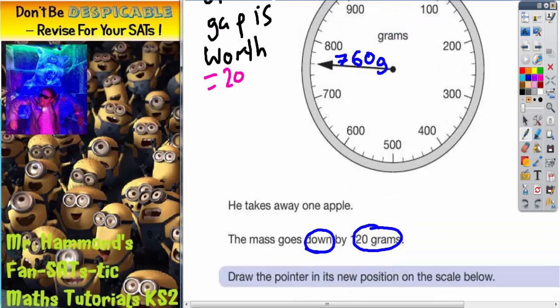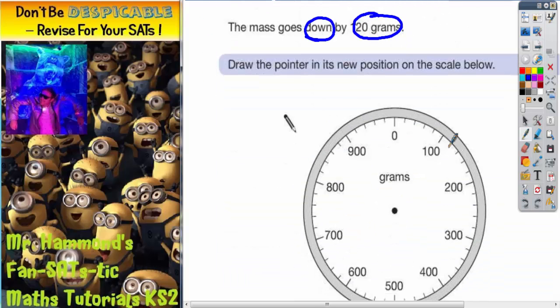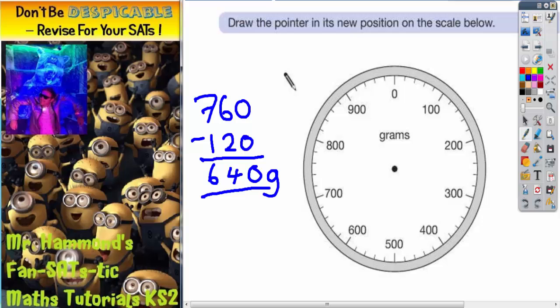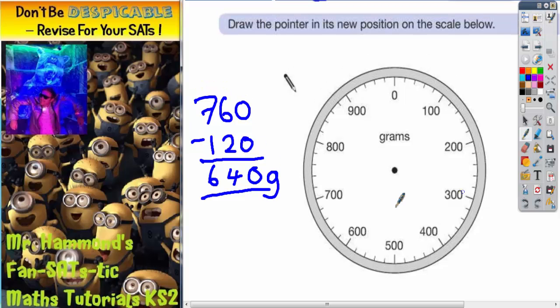We already know that this is worth 760. So if we do 760 take away 120 grams, it's got to be take away because it's going down. 0 take away 0 is 0. 6 take away 2 is 4. 7 take away 1 is 6. So when it's gone down by 120 grams, it's going to be left on 640 grams. So we've got to draw the pointer in its new position.